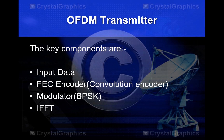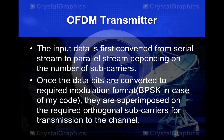The key components of the OFDM transmitter are input data, FEC encoder or convolution encoder, modulator — in my case BPSK — and then IFFT. The input data is first converted from a serial stream to a parallel stream depending on the number of subcarriers. Once the data bits are converted to the required modulation format, they are superimposed on the required orthogonal subcarriers for transmission to the channel.